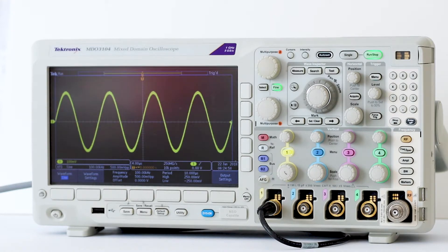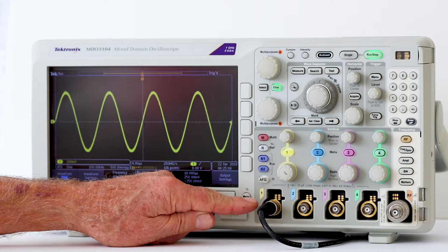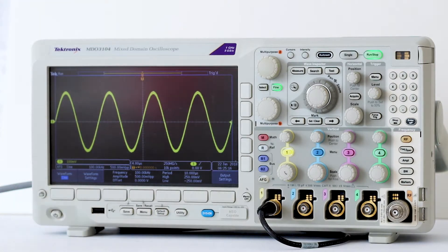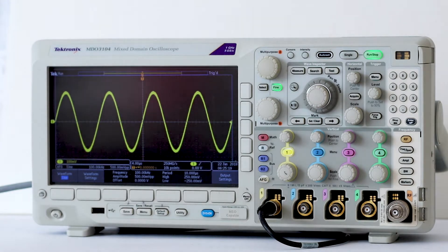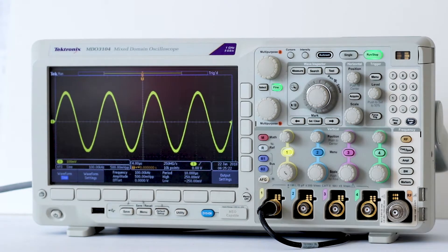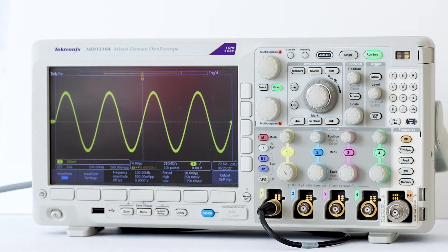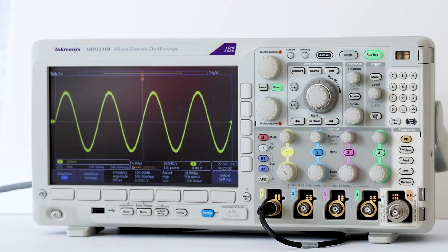To start, we'll apply a sine wave from the internal arbitrary function generator to analog channel 1. Here we see the sine wave displayed on the screen. The default settings shown in the AFG bar are frequency at 100.00 kHz and amplitude at 0.5 volts peak to peak. These values can be adjusted by pressing waveform settings and turning multipurpose knobs A and B, but they are just fine for what we are doing today.